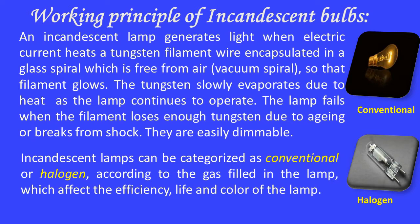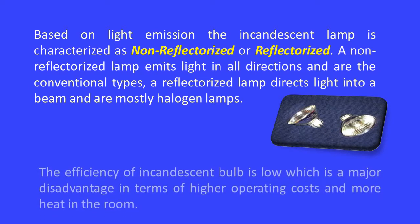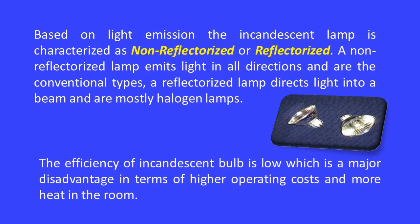Incandescent lamps can be categorized as conventional or halogen according to the gas filled in the lamp, which affects efficiency, life, and color. Based on light emission, incandescent lamps are categorized as non-reflectorized or reflectorized. A non-reflectorized lamp emits light in all directions, while a reflectorized lamp directs light into a beam and is mostly halogen. The efficiency of incandescent bulbs is low, which is a major disadvantage in terms of higher operating cost and more heat.